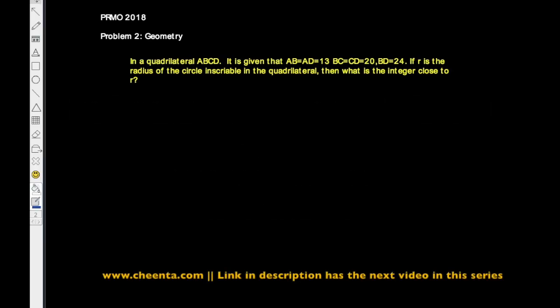This is the second problem from pre-RMO 2018, a problem from an Indian Olympiad. It starts with a kite with sides ABCD. This point is A, this is B, so AB and AD are equal to 13. Then BC and CD are each 20.